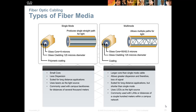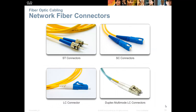Multi-mode fiber has a larger core — between 50 and 62.5 microns — which causes more dispersion of light, limiting distance and maximum speed compared to single-mode. However, it handles bends and corners better, and typically uses LEDs as the light source. Common fiber optic connectors include the ST, SC, and LC connectors. When running duplex — sending and receiving simultaneously — we use double connectors. If you see these connectors, you know you're working with fiber optic cable.